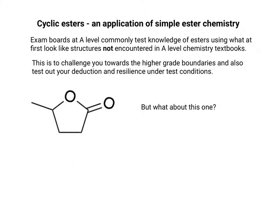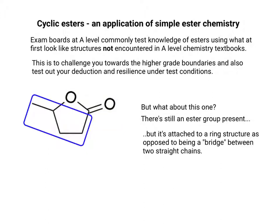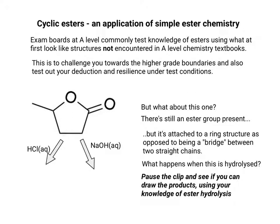However, what if we start making it a bit more complicated? We have an ester group, but the thing about this is it's attached to a ring structure instead of being a bridge between two straight chains. The kind of thing you'd be asked about is to deduce what would happen when this is hydrolyzed. So why not pause the clip and see if you can work out what the products might be from those two hydrolysis reactions.